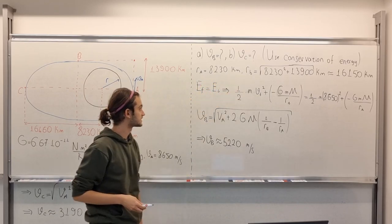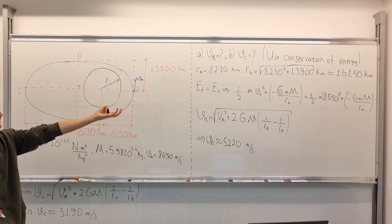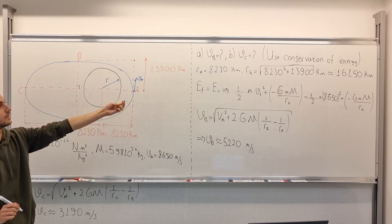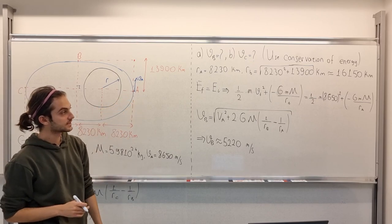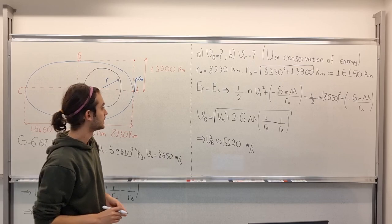And RB is equal to, by Pythagorean theorem, we have about 16,150 kilometers, that is RB.